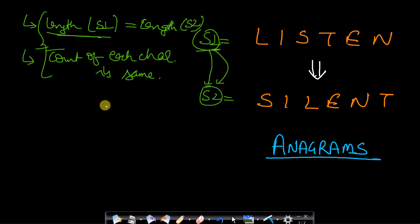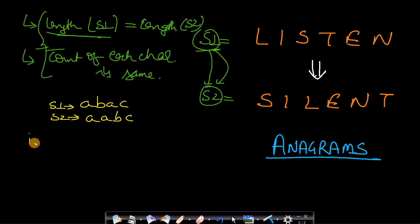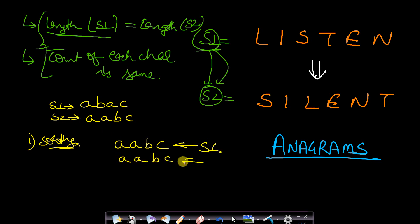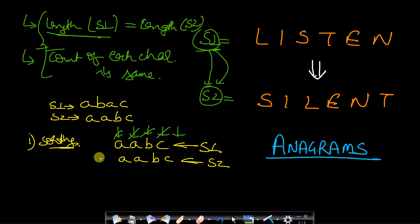Let's take a simpler example: S1 is 'abac' and S2 is 'aabc'. To check if they are anagrams, one approach is sorting. If you sort S1 you get 'aabc', and if you sort S2 you also get 'aabc'. Now compare both strings character by character. If all characters match up to the end, then S1 and S2 are anagrams. If you find any mismatch, you can immediately return that they are not anagrams.